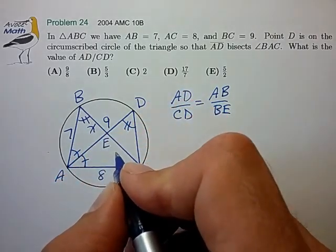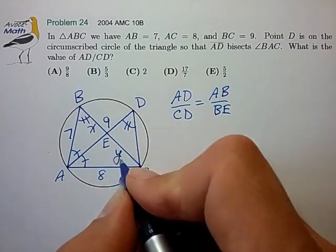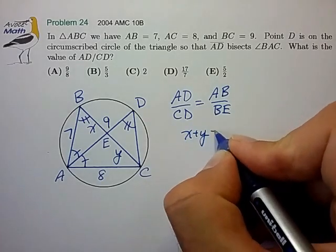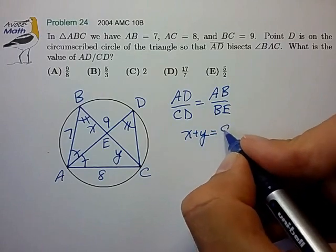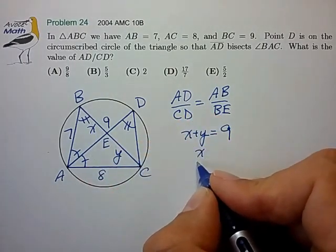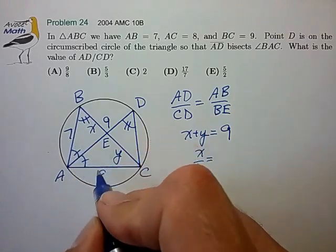So, let's call BE a side of length X, EC of length Y. So, we know that X plus Y is equal to the total length, 9. We also know that X is to Y, as 7 is to 8.